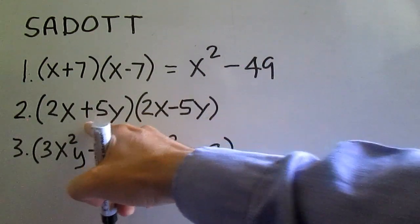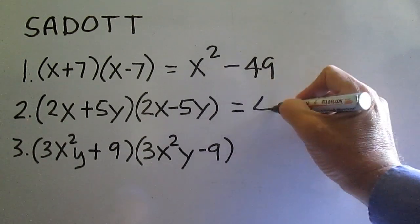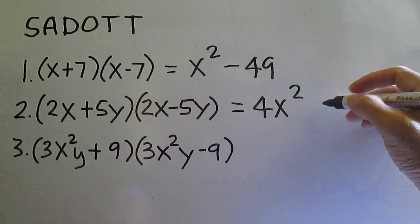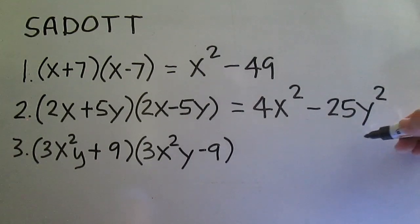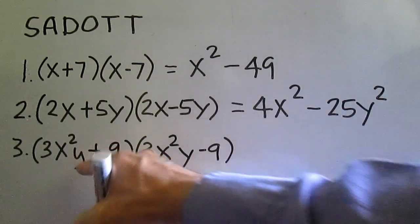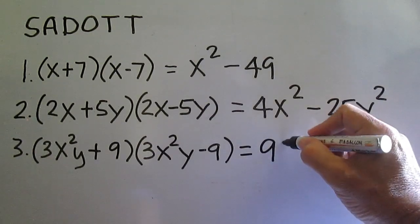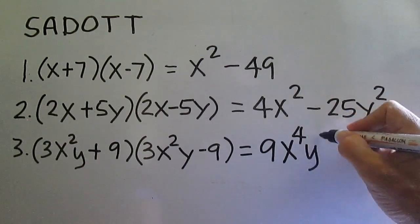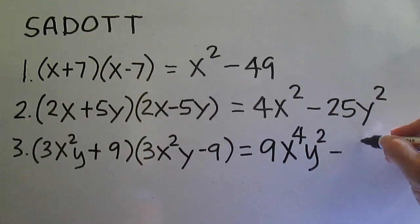Number 2 is also in the form sum and difference of two terms. The product of the sum and difference of two terms is equal to the square of the first term minus the square of the second term. For number 3, 3x squared y is the first term and 9 is the second term. The square of the first term is 9x to the fourth y squared, minus 9 times 9 is 81.